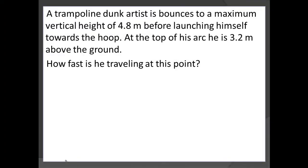Let's look at a different one. Trampoline dunk artist, I know we've all seen these. Think of the gorilla for the Phoenix Suns, definitely an example. Is bounced to a maximum vertical height of 4.8 meters before launching himself towards the hoop. At the top of his arc, he is 3.2 meters above the ground. How fast is he traveling at this point? So we need to make sure we draw the picture correctly. So again, he is bounced on the trampoline to a height of 4.8 meters. So if we draw, there he is. Let's say there's the trampoline right there, and we know that he is 4.8 meters above the ground.